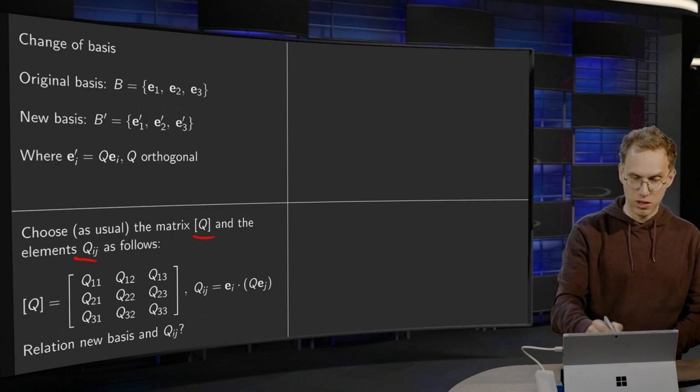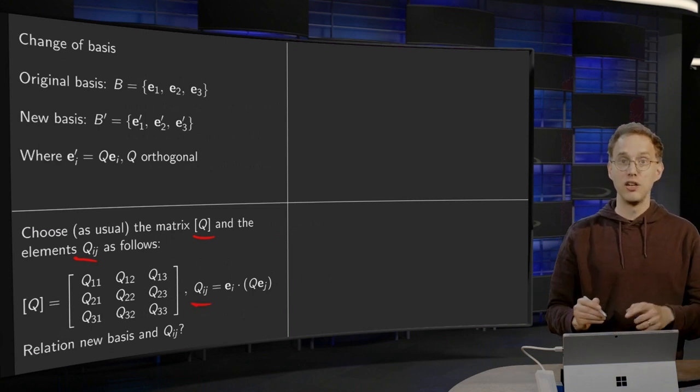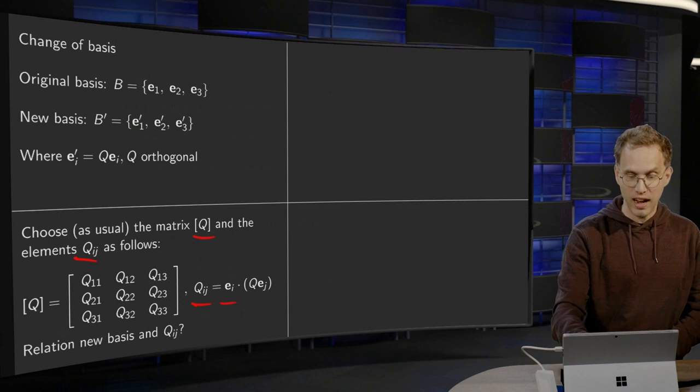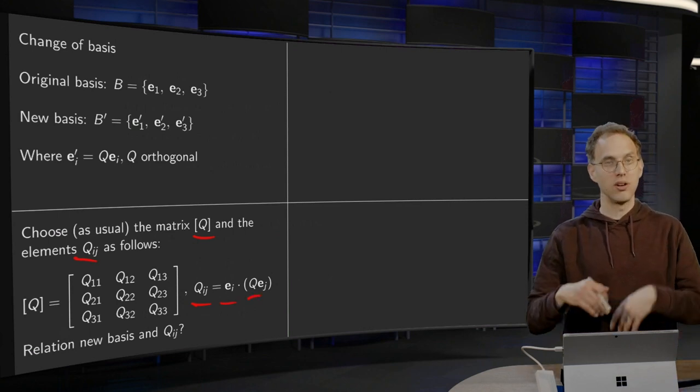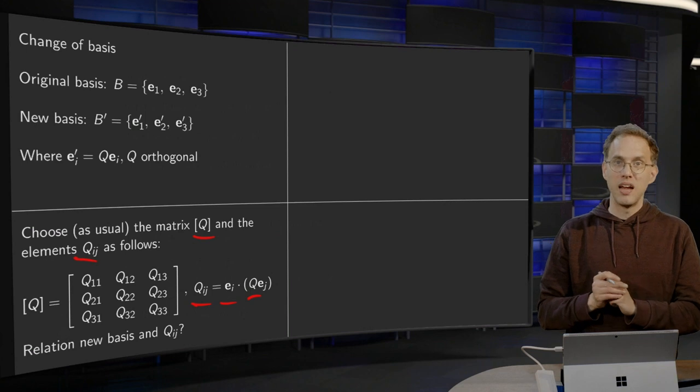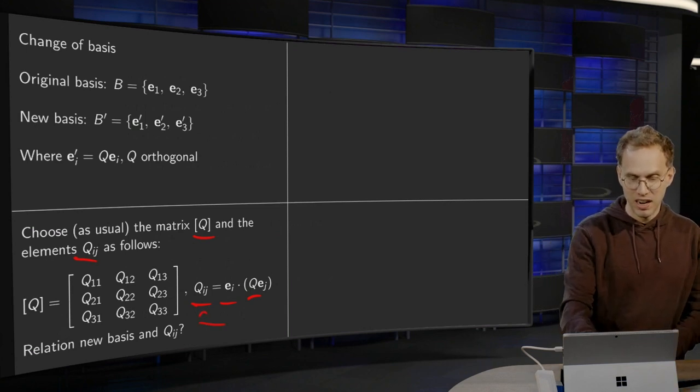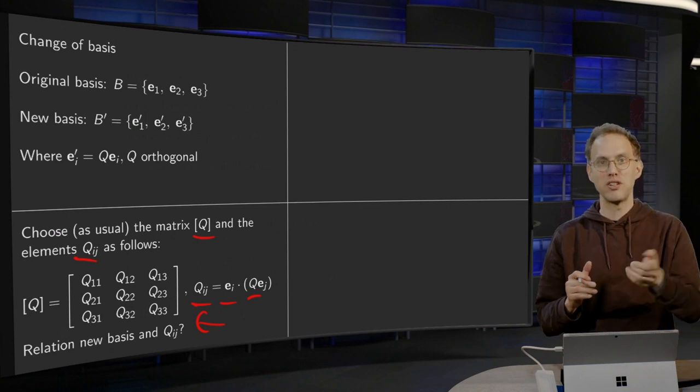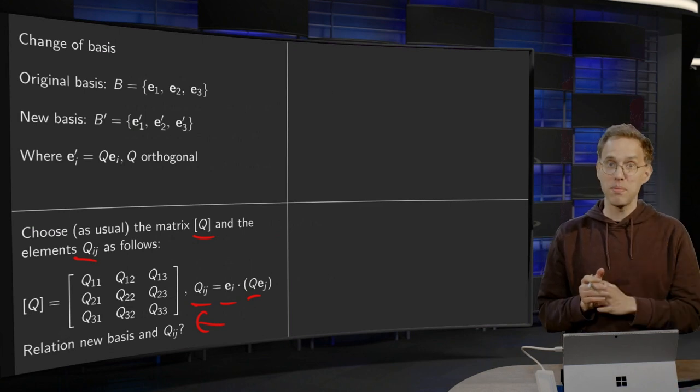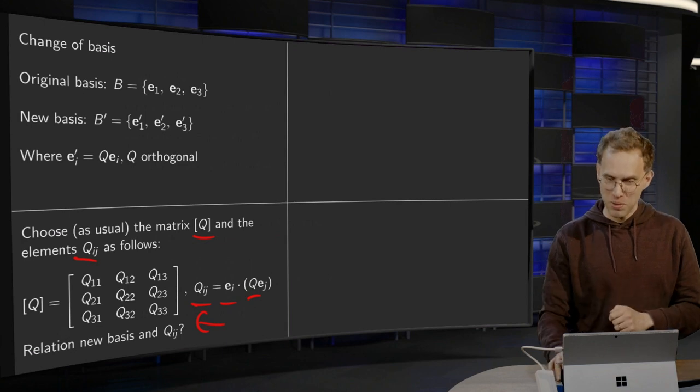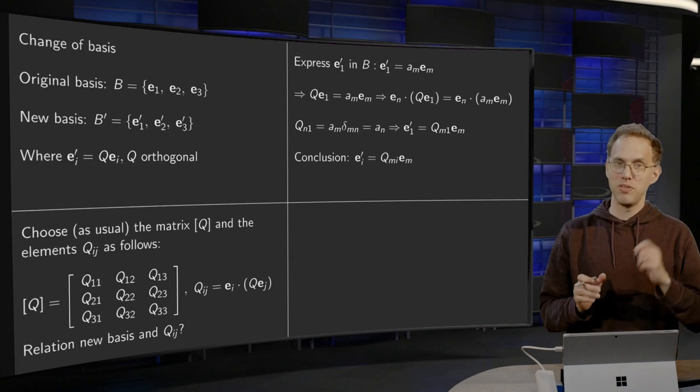Now, what does this mean for our new basis? What is the relation between the new basis vectors EI' and those numbers QIJ? That's a bit tricky, but we'll see.